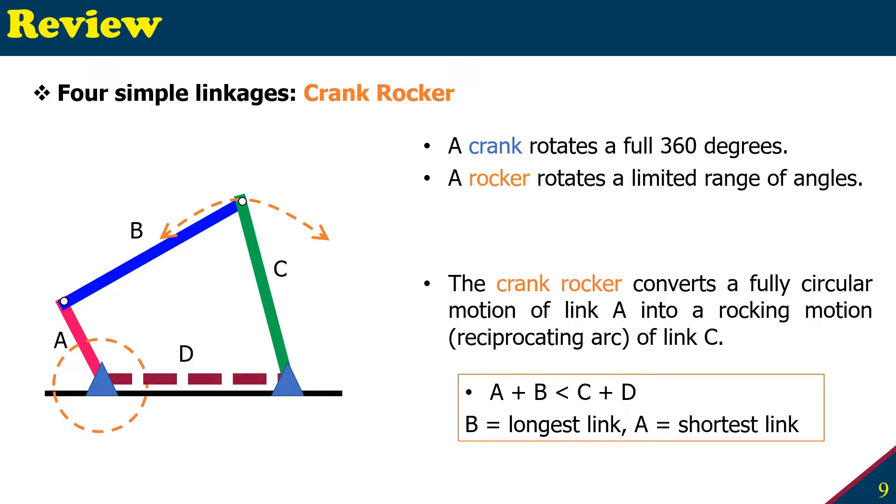A crank rocker converts a fully circular motion of link A into a rocking motion or reciprocating arc motion of link C. So link A rotates 360 degrees, that's a crank. And C here can only rotate a limited range, that's a rocker.